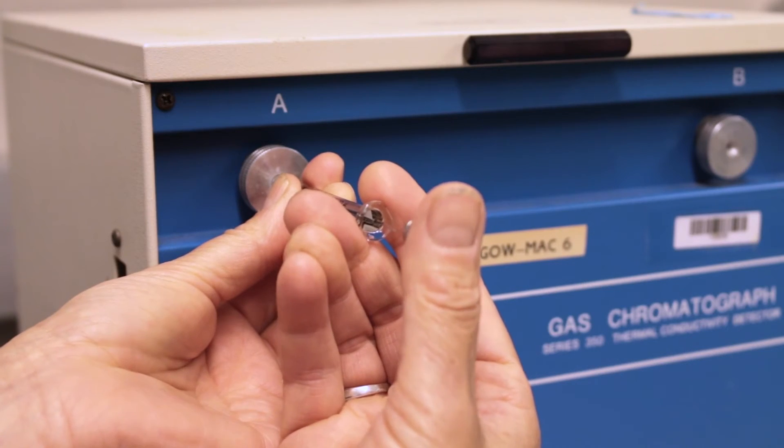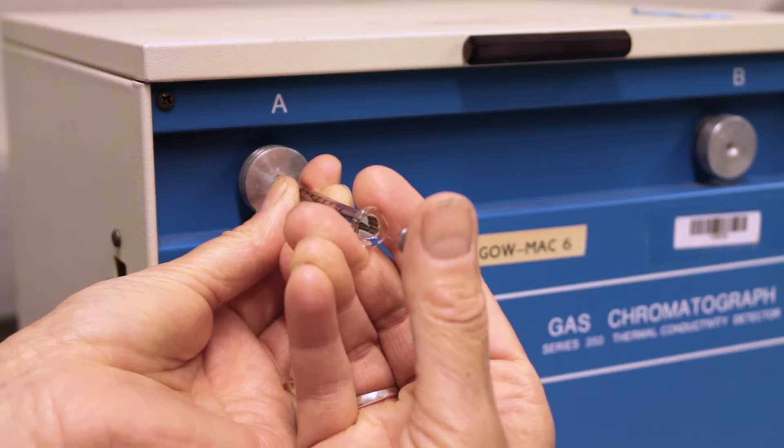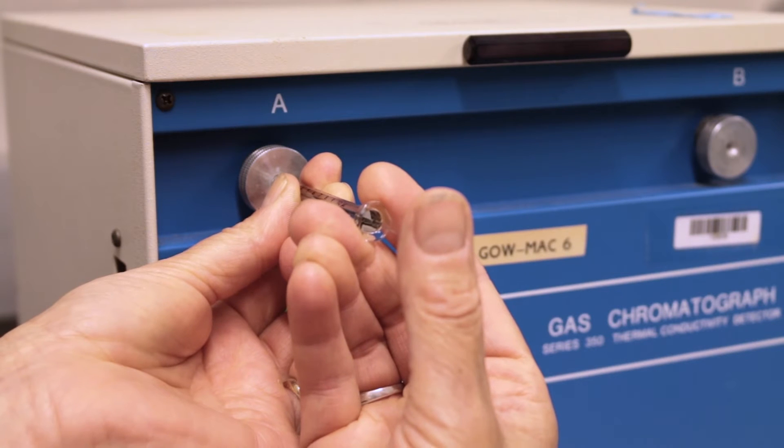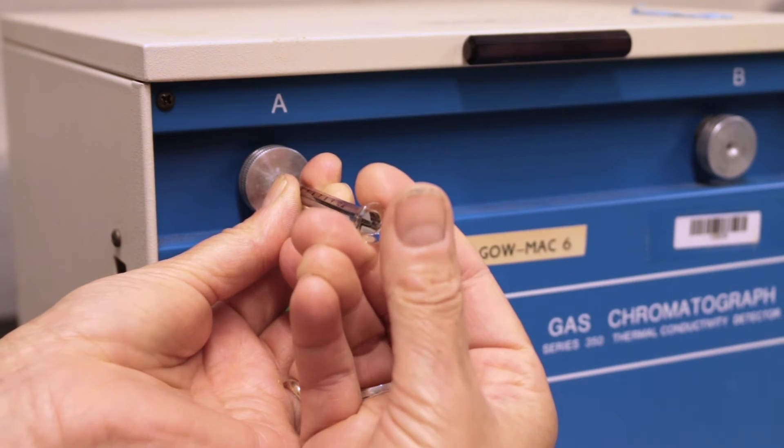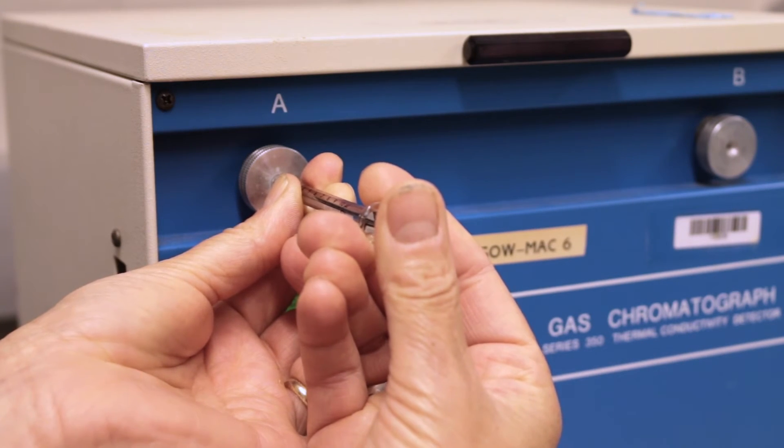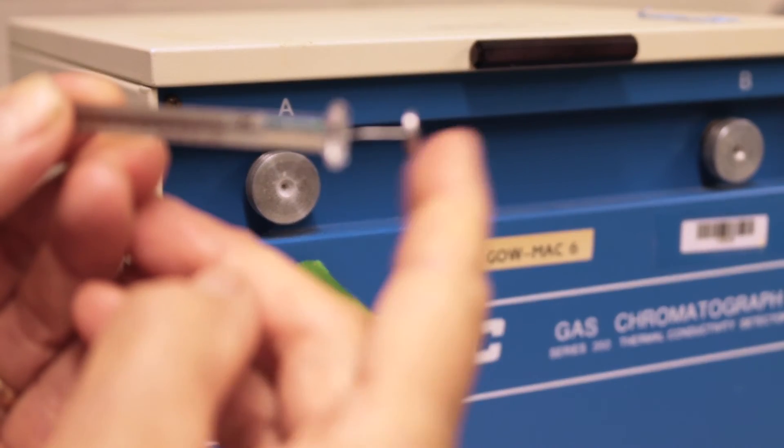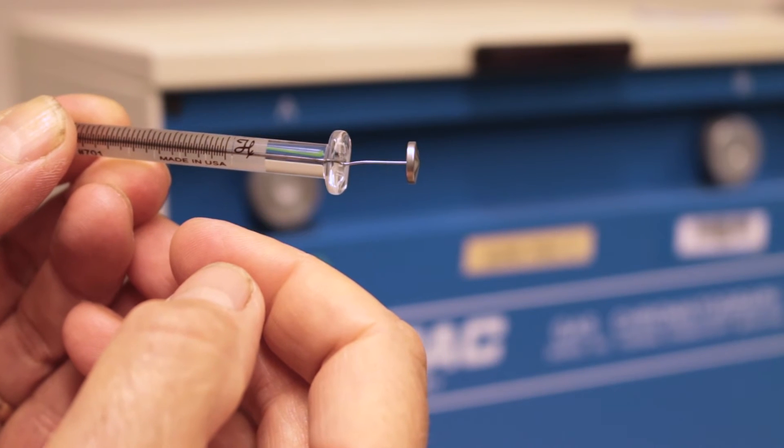Keep your thumb positioned behind the plunger while doing this because sometimes the heat and gas can blow the plunger back at you out of the syringe. Once the barrel hits the port, use your thumb to depress the plunger, injecting your sample onto the column. Remember, the plunger does not end up flush with the barrel when fully depressed.